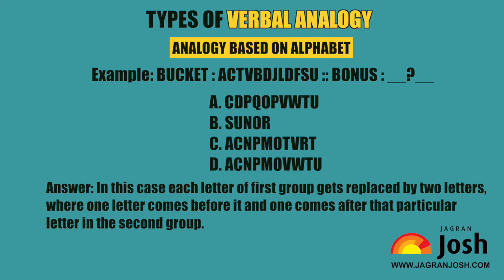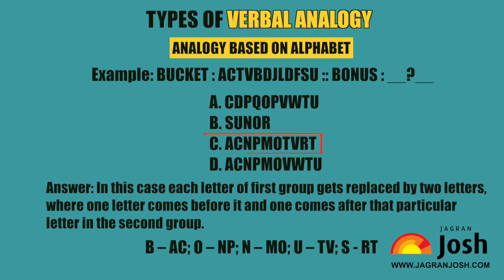The answer is: in this case, each letter of the first group gets replaced by two letters — one letter that comes before it and one that comes after it in the alphabet. So B becomes AC, O becomes NP, N becomes MO, U becomes TV, and S becomes RT. Hence option C — AC NP MO TV RT — is the correct answer.